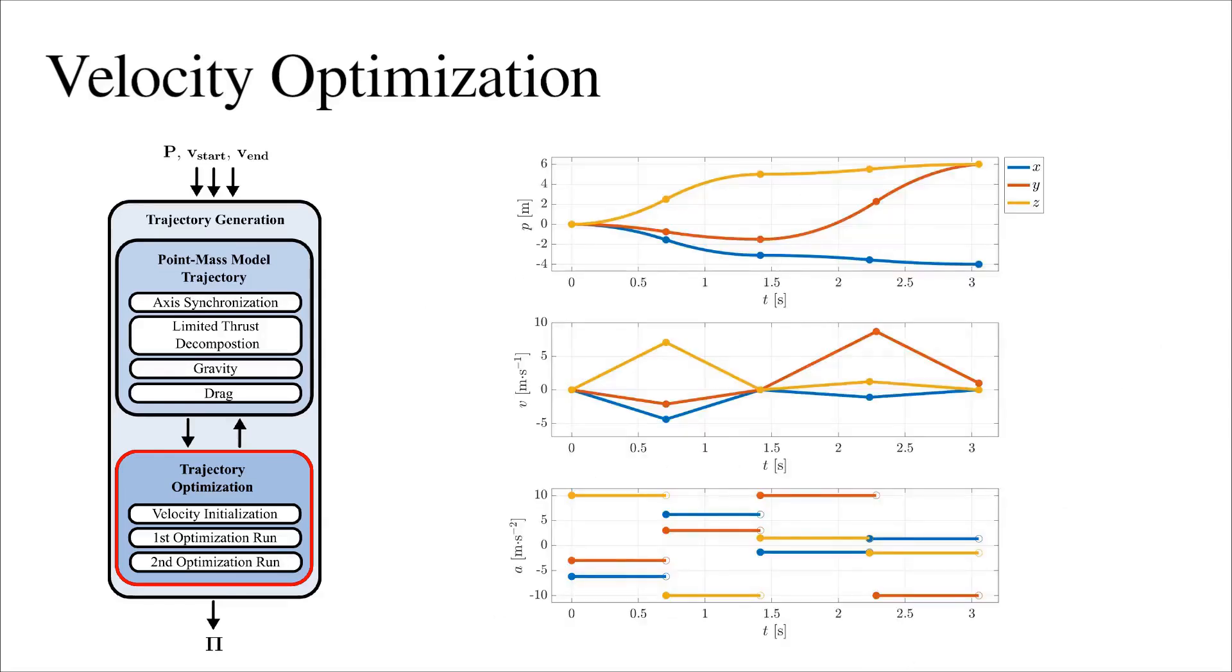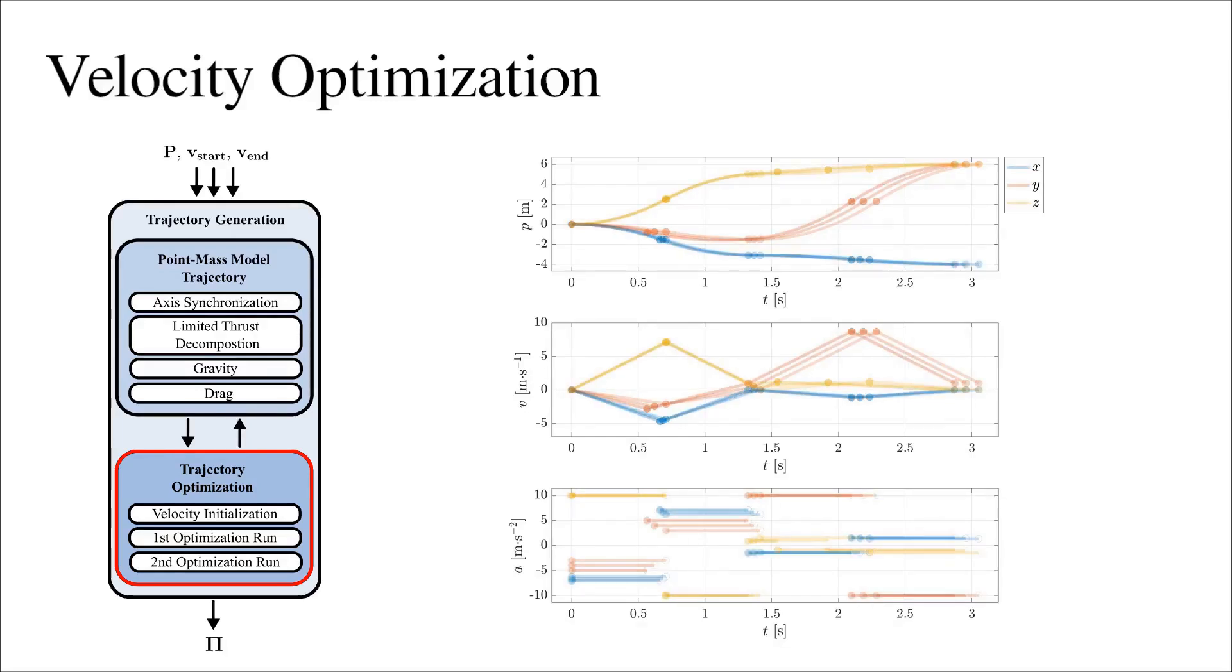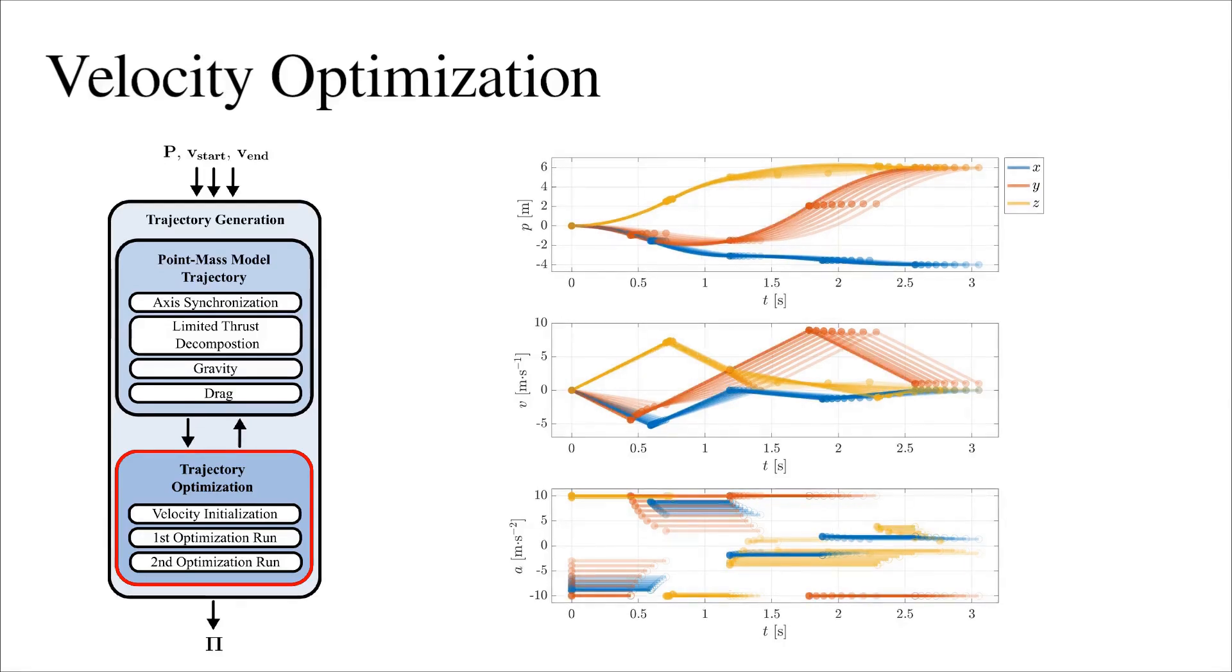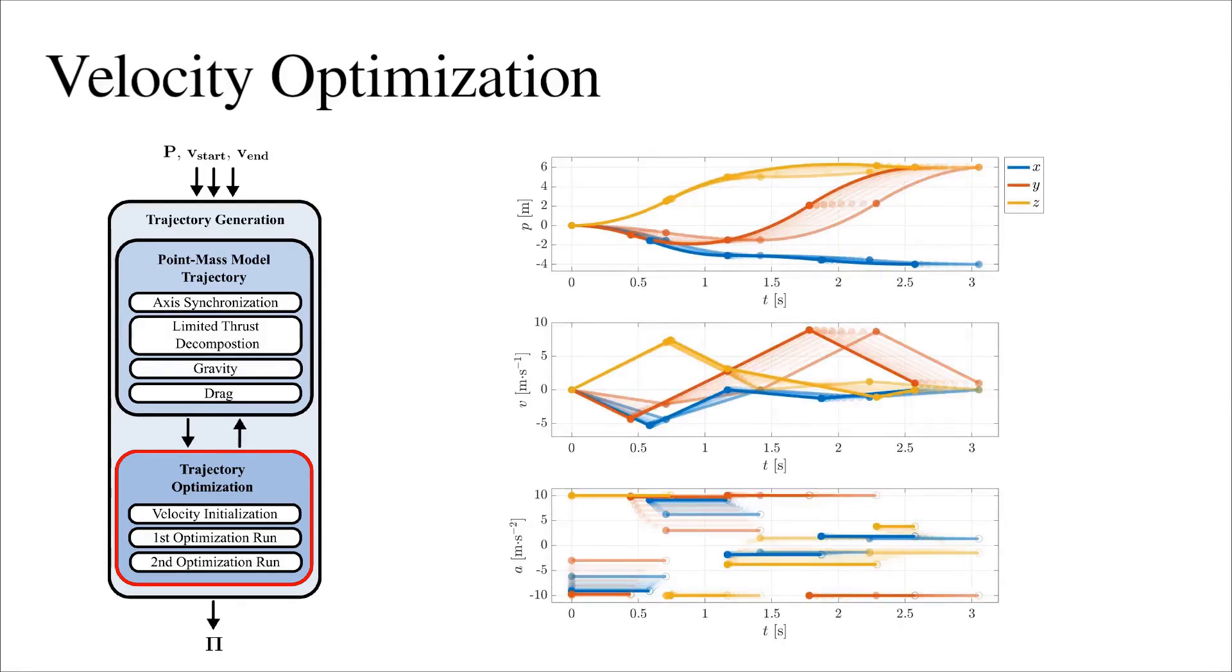To solve this, we propose an iterative gradient descent-based optimization method. Displayed is a trajectory with one via-waypoint. By finding the partial derivative of the trajectory duration with respect to the unknown velocity, we iteratively adjust the velocity in the waypoint to minimize the total trajectory duration.